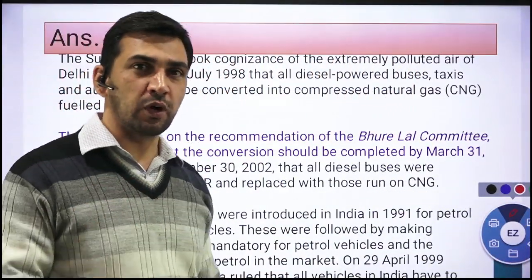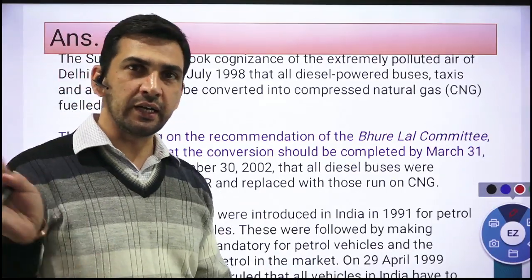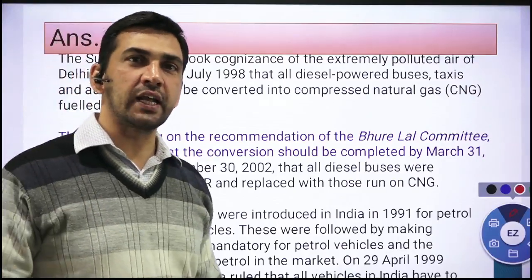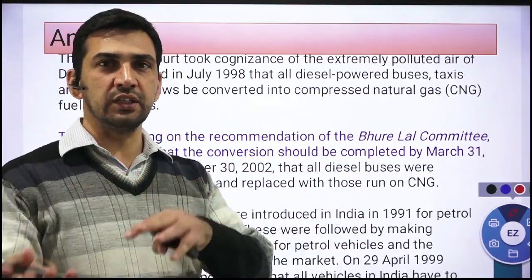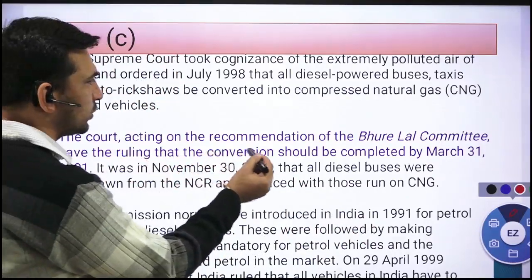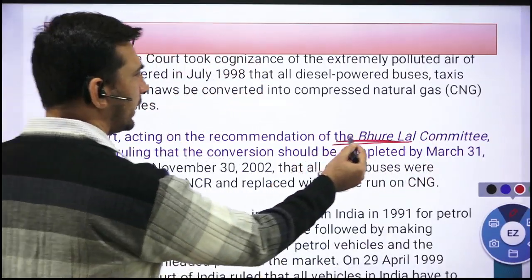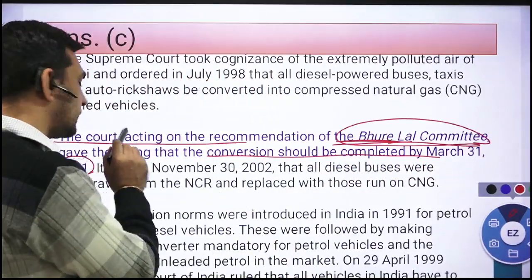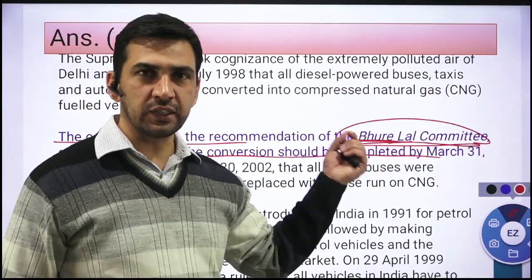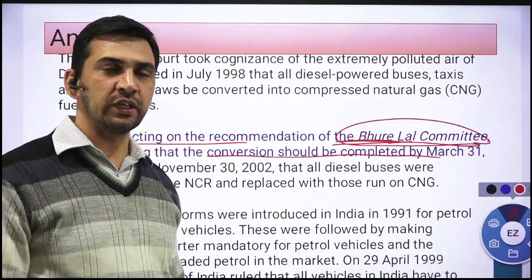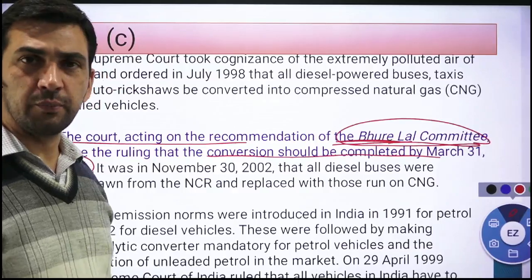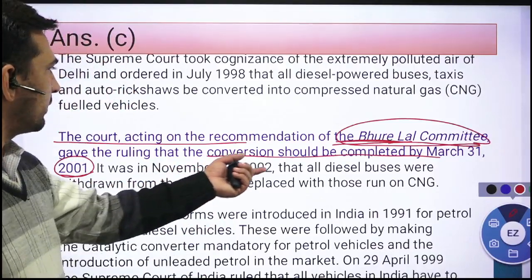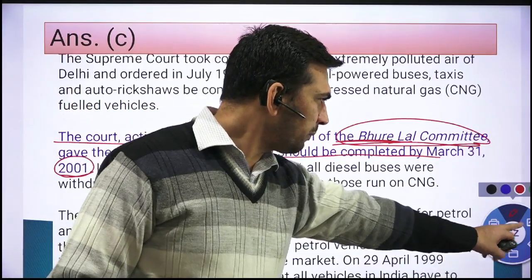A brief background: around 1998, pollution levels in Delhi were very high. The Supreme Court came forward and directed that all diesel-powered vehicles should be converted to CNG. This was based on the Bhurelal Committee's recommendation, which said this conversion should be complete by 2001. Although it could not be done by 2001, it was completed by 2002. The Bhurelal Committee was thus a key committee recommending diesel-to-CNG conversion for vehicular emission control.